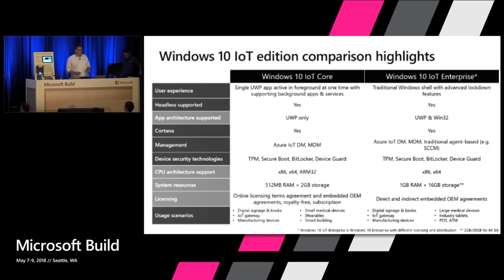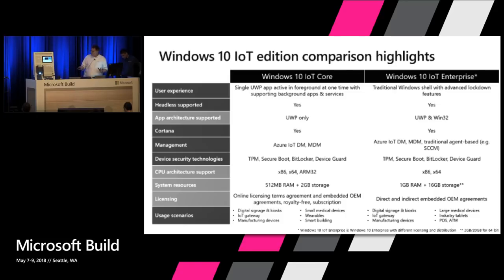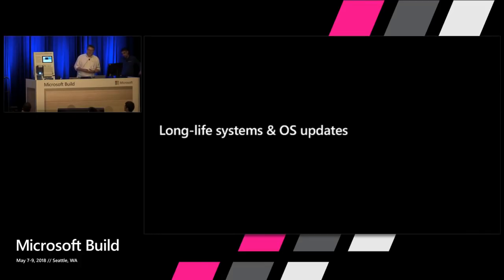Before getting too deep, let me level-set the two different editions of Windows 10 IoT. We have Windows 10 IoT Core, aimed at small devices — 512 MB of RAM, small storage, running on ARM 32, yet still having a full Windows UI surface to program against. And then we have Windows 10 IoT Enterprise, which is Windows 10 Enterprise designed for fixed device situations, with all its power and hardware requirements. Together these are the Windows 10 IoT edition family. I'll hand it off to Shirag to talk about long-life silicon and our OS.